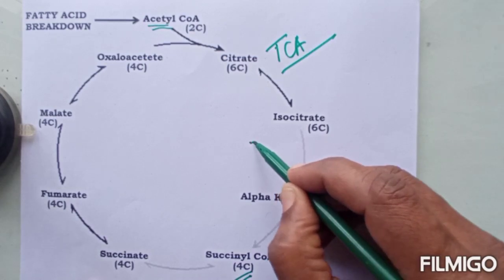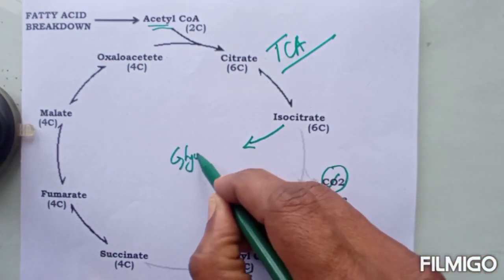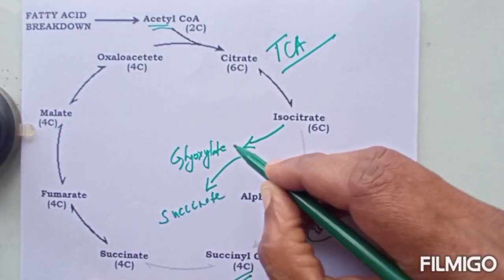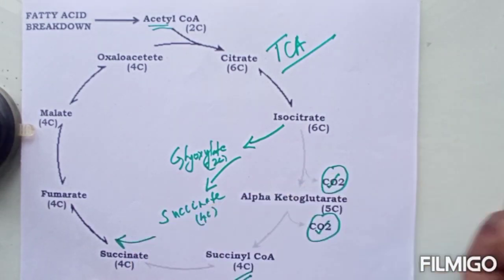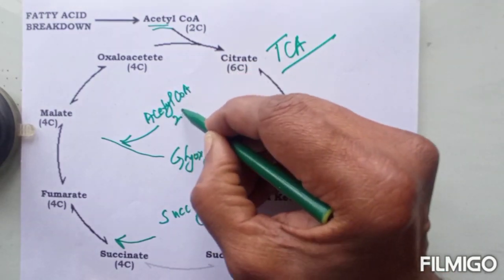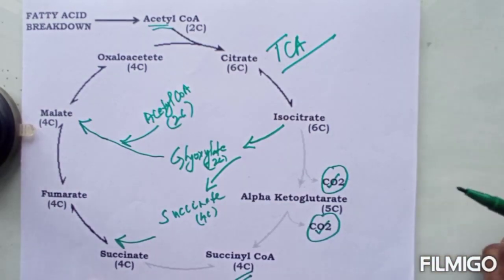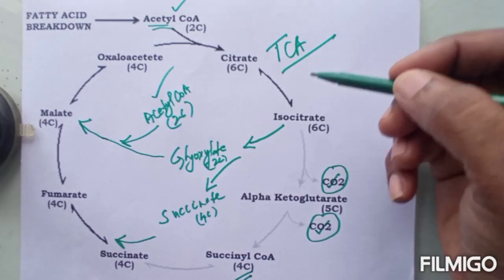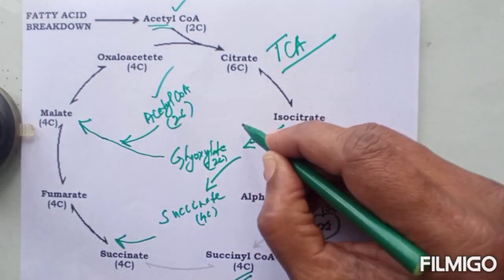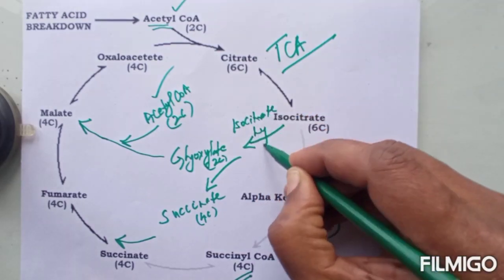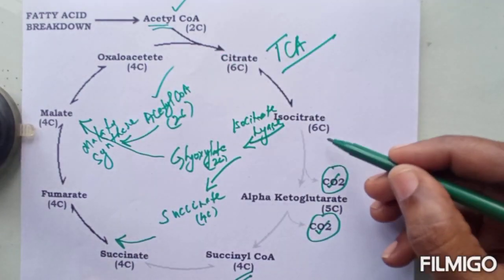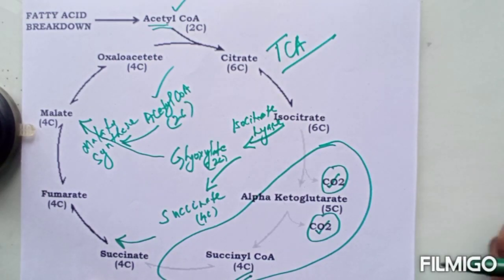In the glyoxylate cycle, isocitrate gives rise to glyoxylate (2-carbon) and succinate (4-carbon). Succinate can continue through the TCA cycle. Glyoxylate then accepts another molecule of acetyl-CoA to give a molecule of malate. So two molecules of acetyl-CoA give rise to malate, a 4-carbon compound. The step producing glyoxylate and succinate is catalyzed by isocitrate lyase, and the step producing malate is catalyzed by malate synthase. This is how the two carbon-loss steps are bypassed in the glyoxylate cycle.